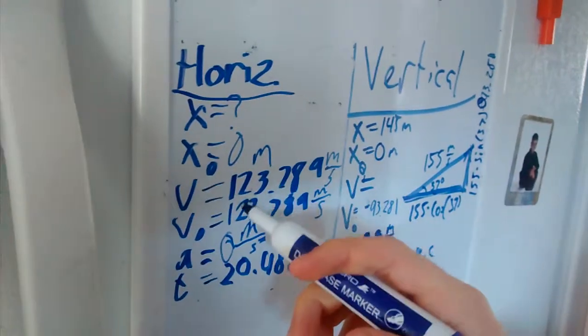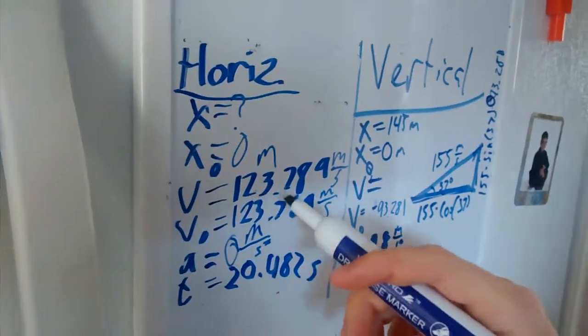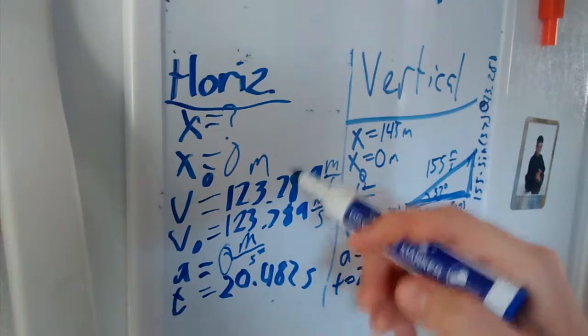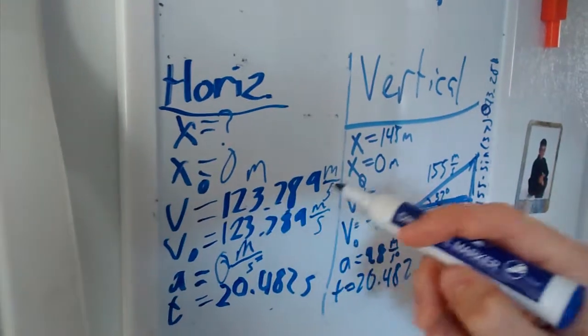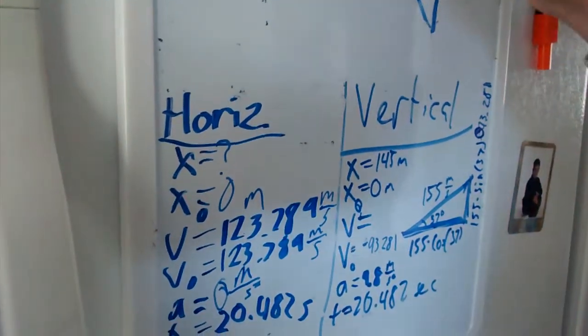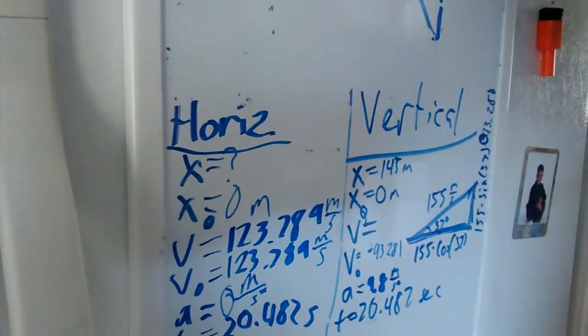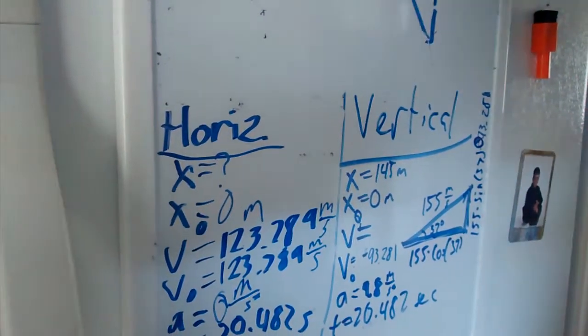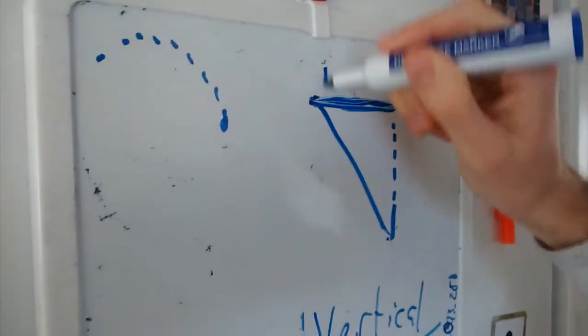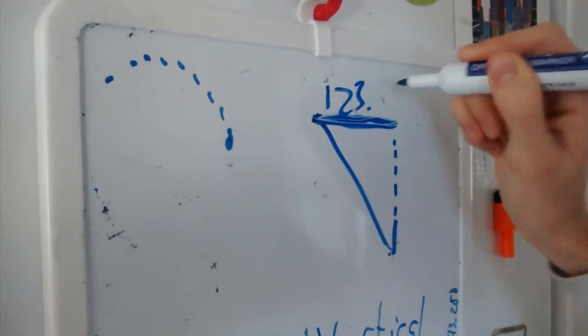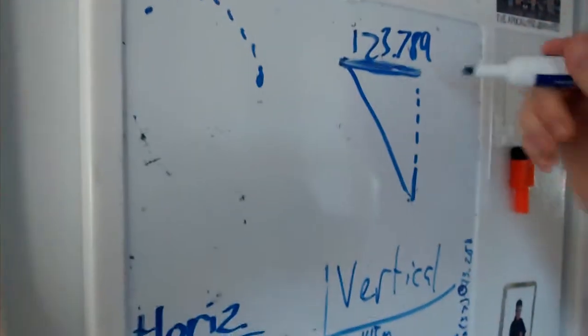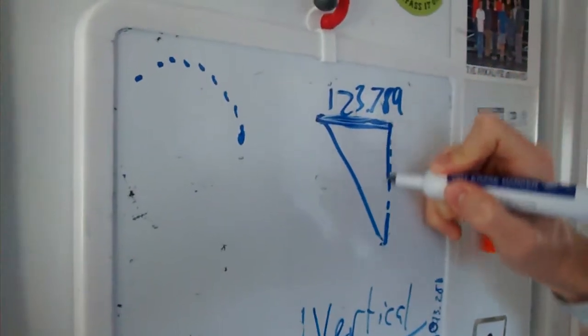So the horizontal and vertical, we know for horizontal, remember we talked about this earlier, the velocity does not change. It changes a little bit because of air resistance, but we're going to say it doesn't change. It was 123.789. And that's what it's going to be when it hits the ground. So we know that the horizontal right here is 123.789.